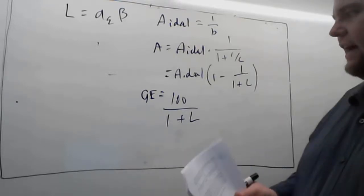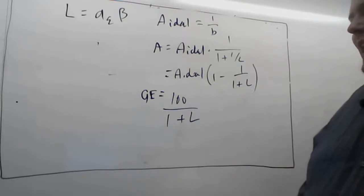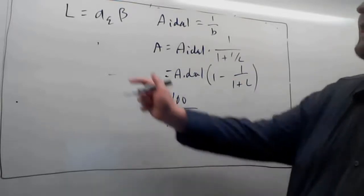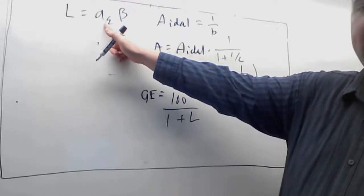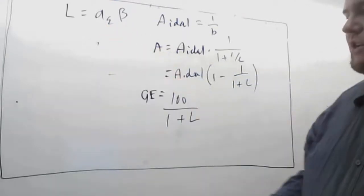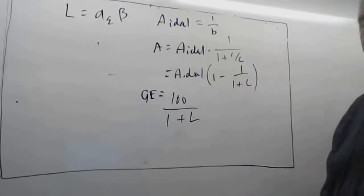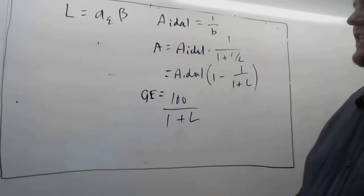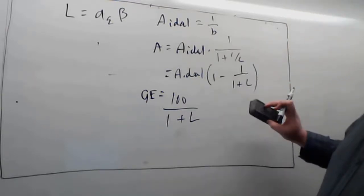This tells us the relationship between the ideal closed-loop gain and the actual gain based on the non-ideal impacts of having a finite open-loop gain. We can see how changes in open-loop gain impact the closed-loop gain without having to redo everything. Let's go through a couple of example problems.